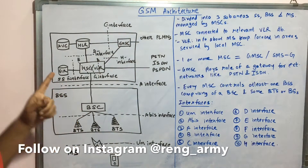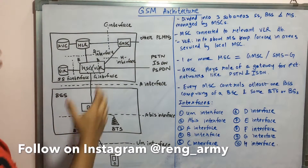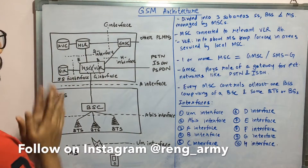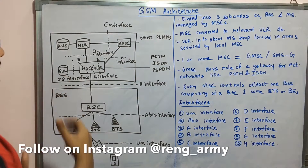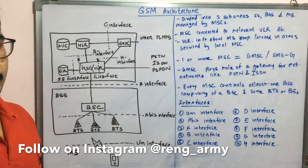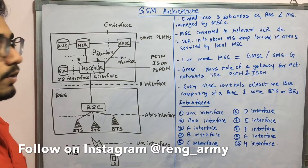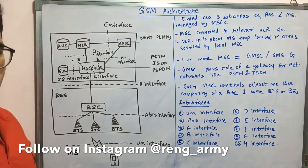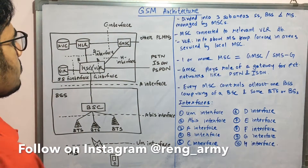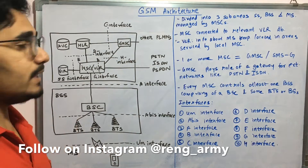Let's move on to the first layer — the Switching System (SS). In SS we have certain components: the AUC, Authentication Center, which is used for maintaining a secret key for authentication and for encoding and decoding of the channels. Then you have the HLR — Home Location Register.